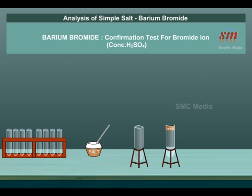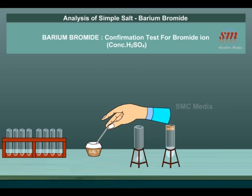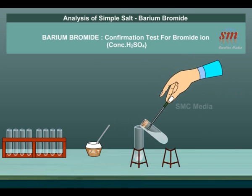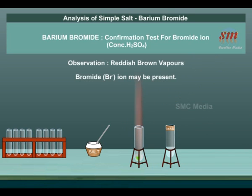Action of Concentrated H₂SO₄: A small quantity of salt is taken in a dry test tube and concentrated H₂SO₄ is added. Reddish brown vapors with pungent smell are evolved, which turns starch yellow. Inference: Bromide Br⁻ ion may be present.